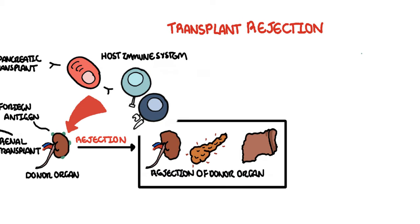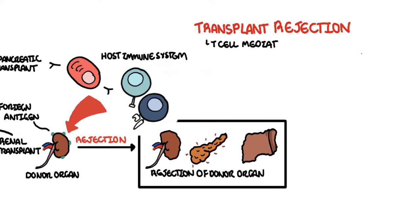There are two main types of transplant rejection: T-cell mediated and antibody mediated rejection. The T-cell mediated transplant rejection can be divided into acute or chronic rejection. Antibody mediated transplant rejection is divided into hyperacute, acute and chronic.